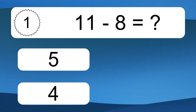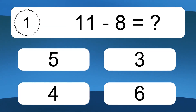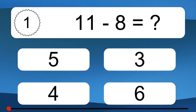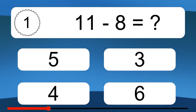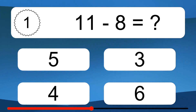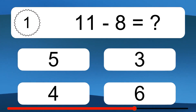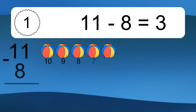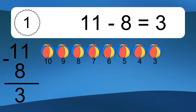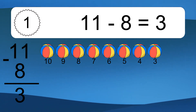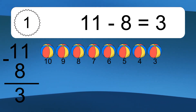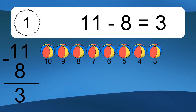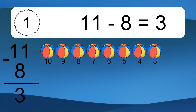11 minus 8 equals what? 11 minus 8 equals 3. Let's count it: 10, 9, 8, 7, 6, 5, 4, 3.